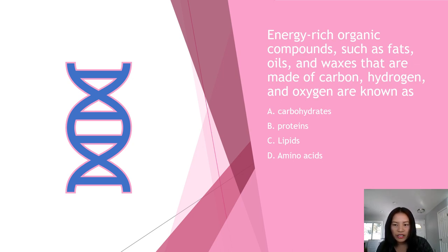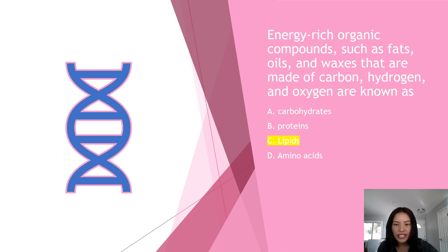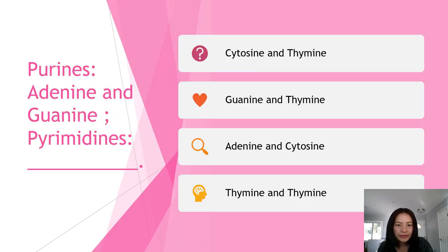Number three: energy-rich organic compounds such as fats, oils, and waxes that are made of carbon, hydrogen, and oxygen are known as what? A) carbohydrates, B) proteins, C) lipids, or D) amino acids? The answer is C, lipids. Lipids are any of a class of organic compounds that are fatty acids or their derivatives, insoluble in water but soluble in organic solvents, and include many natural oils, waxes, and steroids.